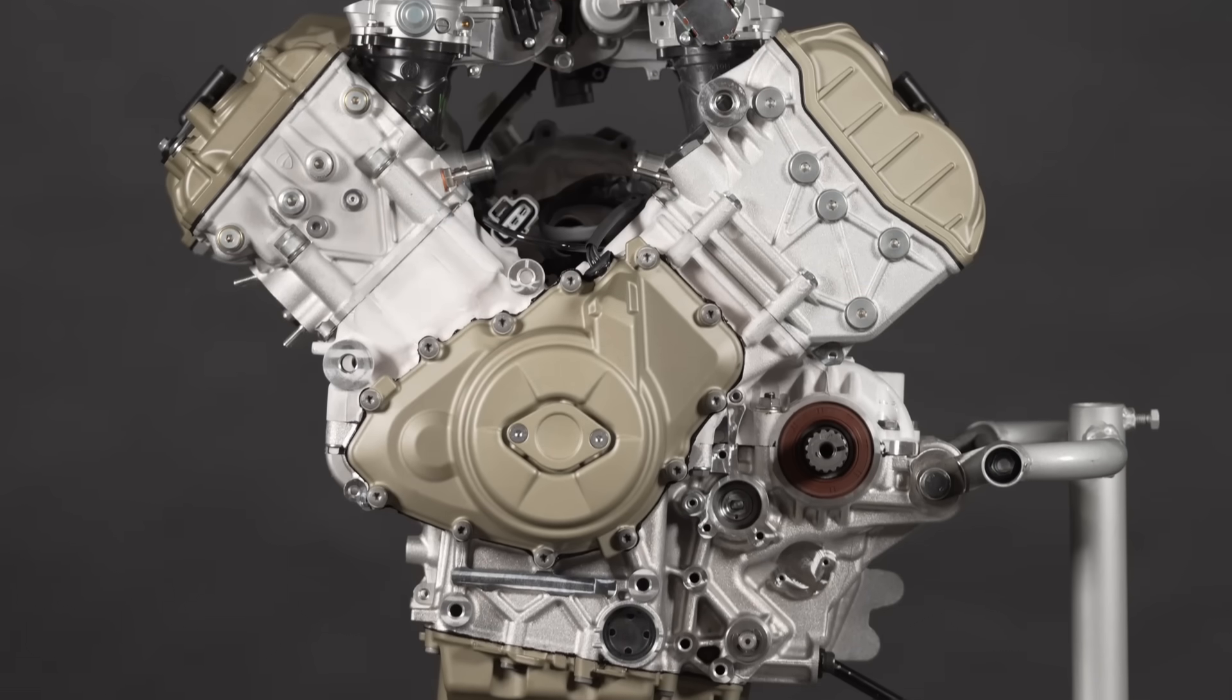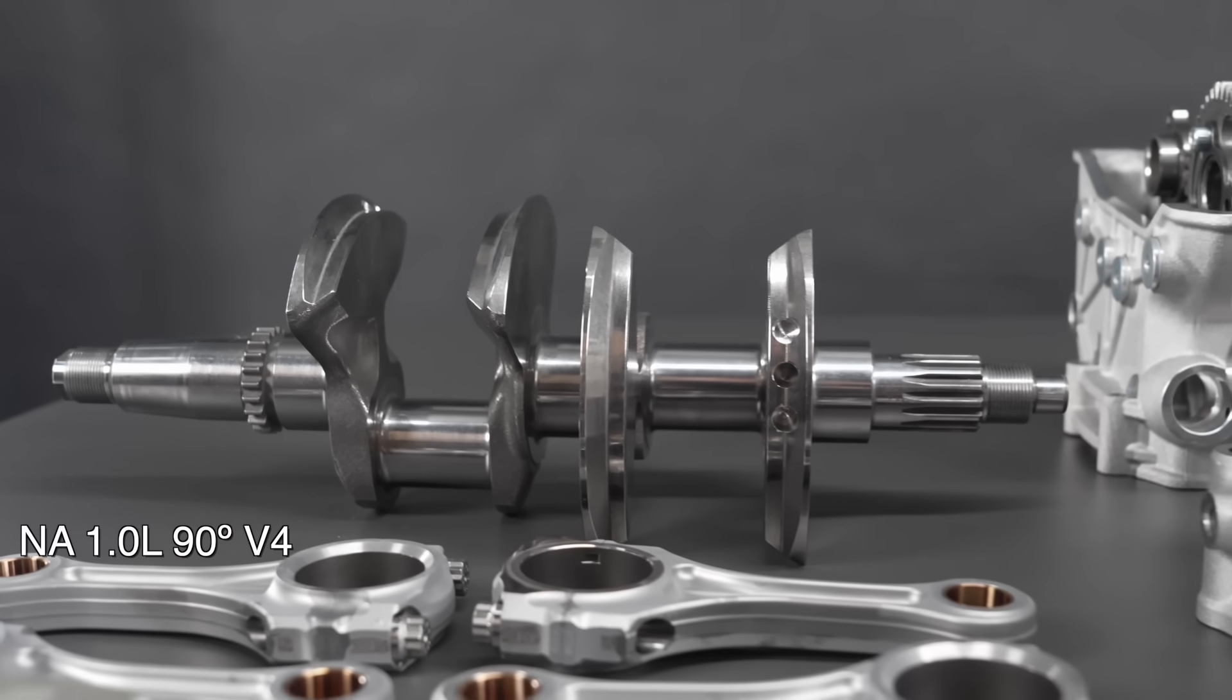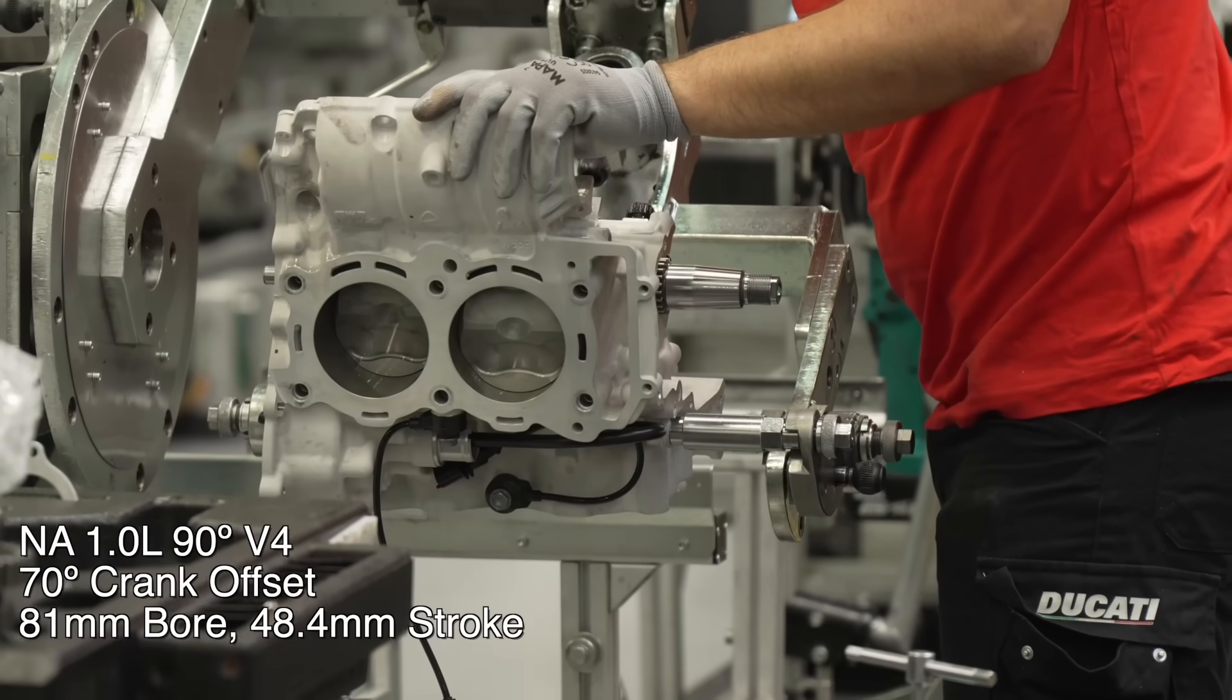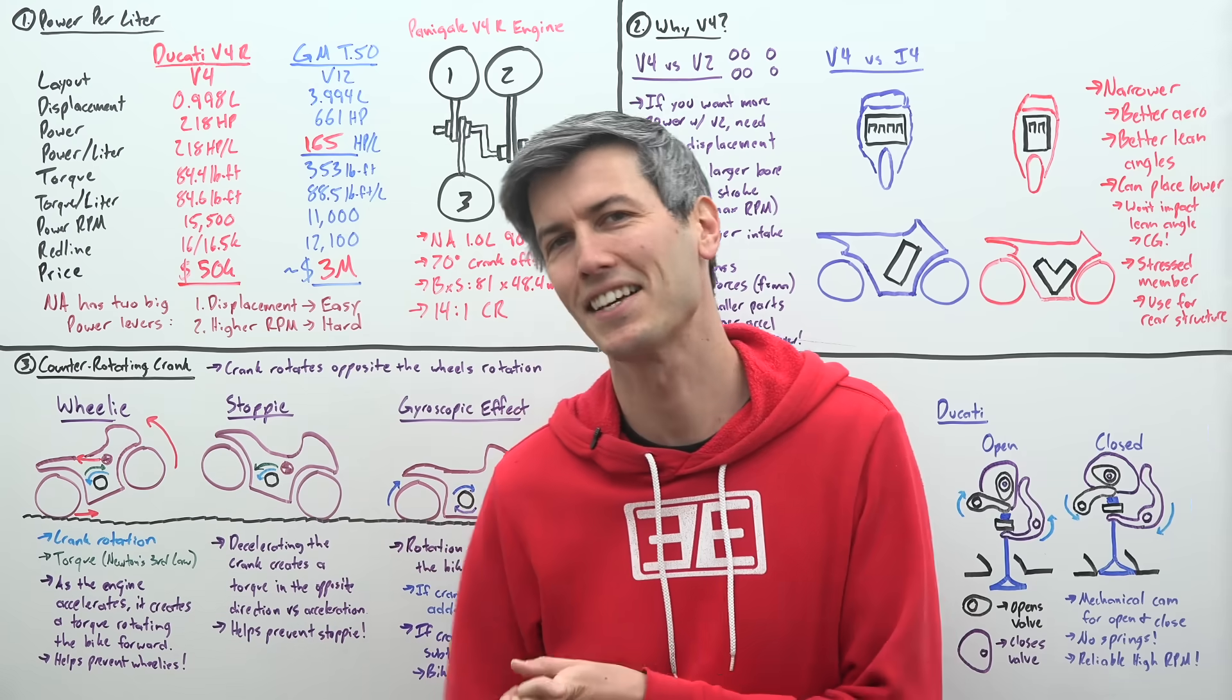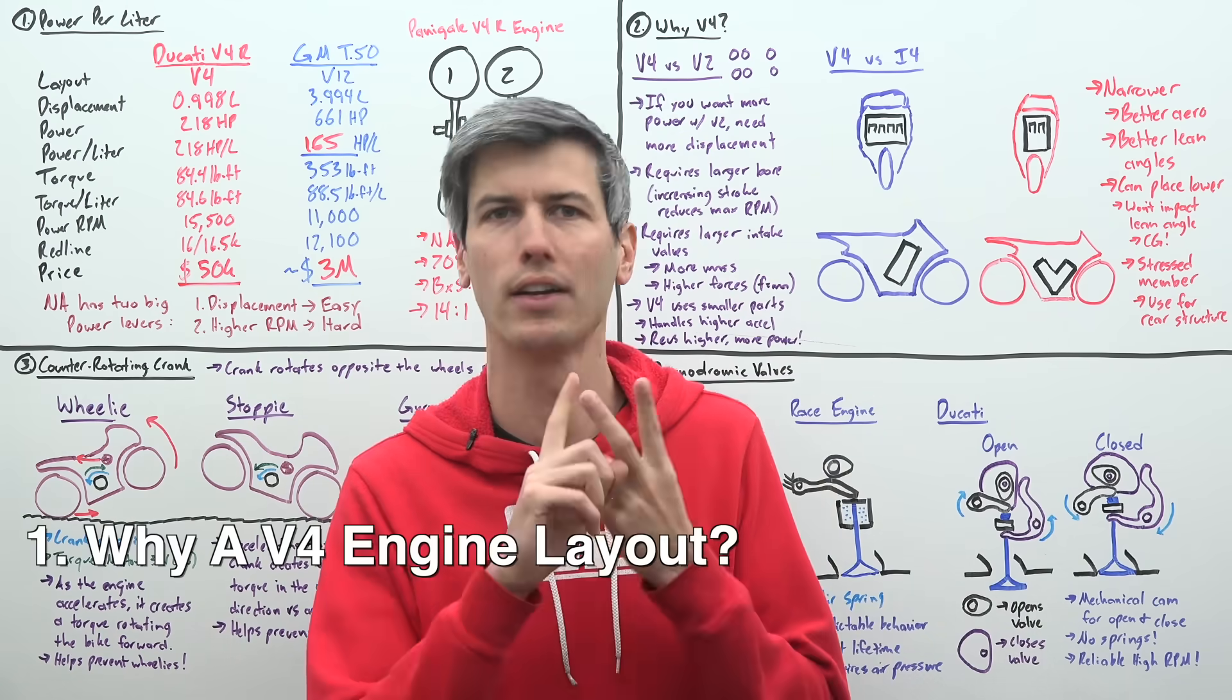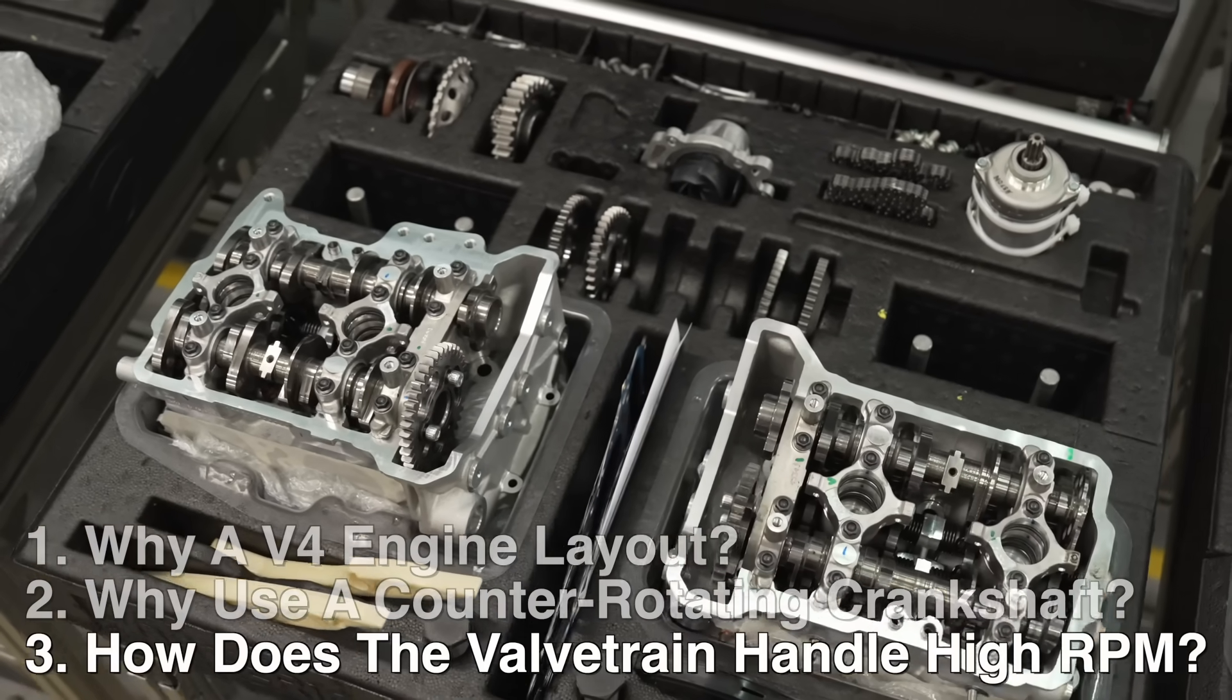So just covering some of the basic specs of this V4R engine, it is a naturally aspirated 1 liter 90 degree V4 engine. It has a 70 degree crank offset, 81 millimeter bore, 48.4 millimeter stroke, of course that short stroke helping it rev high, and a 14 to 1 compression ratio. So for this video, I want to focus on things that Ducati does differently. For example, why they chose a V4 engine layout, why their engines spin the opposite direction of every other street bike out there, and how they're able to handle such high engine RPM.